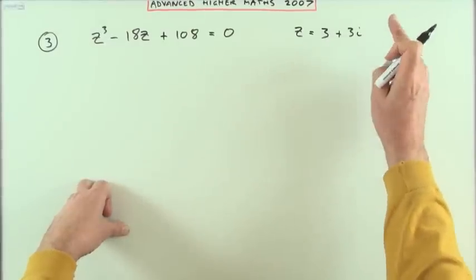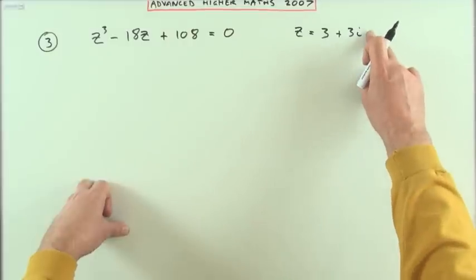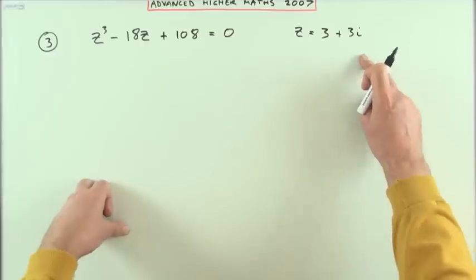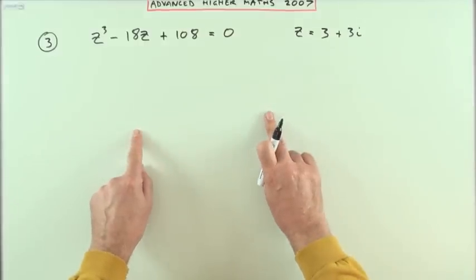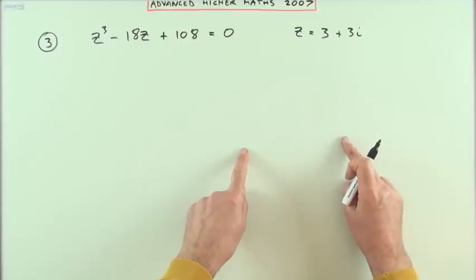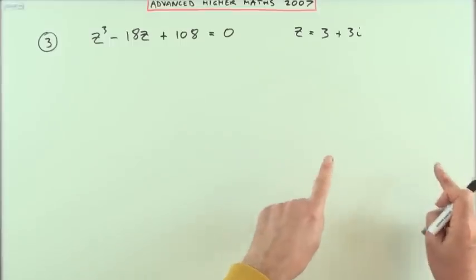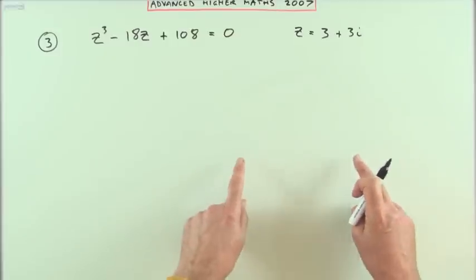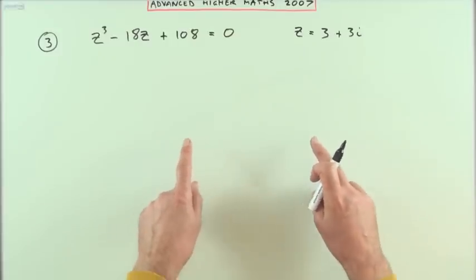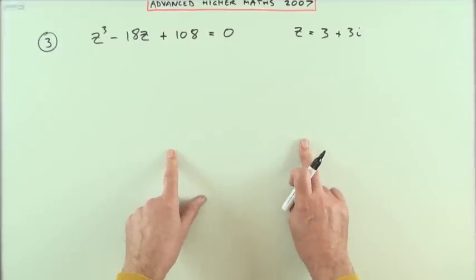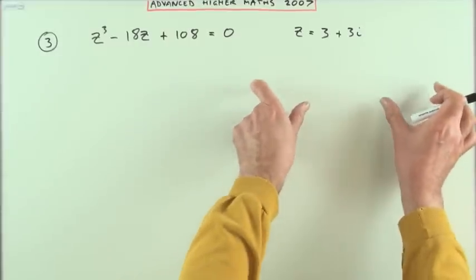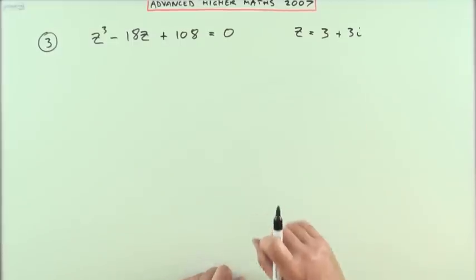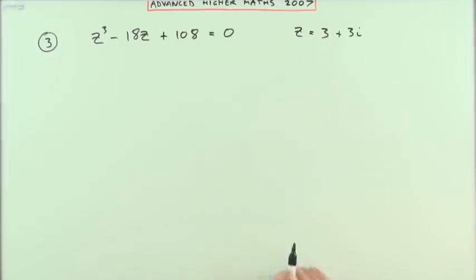But the question says show that that's a root, so you shouldn't really beg the question by assuming it's a root, taking its conjugate, reconstructing the quadratic, dividing it in to show it's a factor, and then retracing your steps saying — well if that quadratic is a factor, then its individual parts are factors, and if this part is a factor then that is a root.